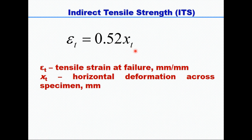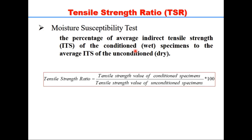We place two LVDTs along the diameter in the horizontal direction and measure this horizontal deformation at failure. This tensile strain parameter is an extremely important parameter to evaluate the fatigue properties or fatigue potential of the mix. Tensile strength ratio is a moisture susceptibility test and it is the percentage of average ITS of conditioned specimens to the average ITS of unconditioned specimens — that is, wet condition divided by dry condition, multiplied by 100.